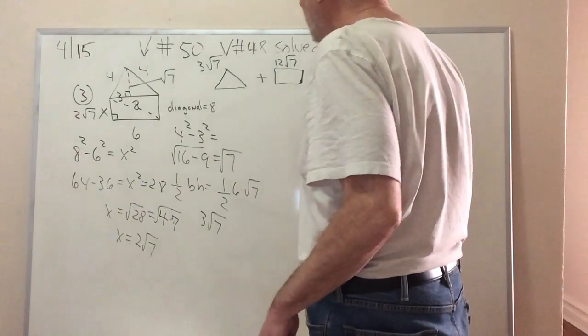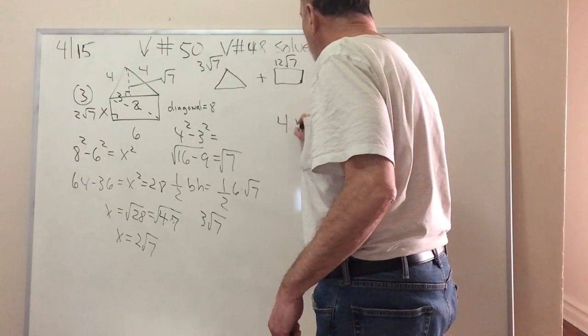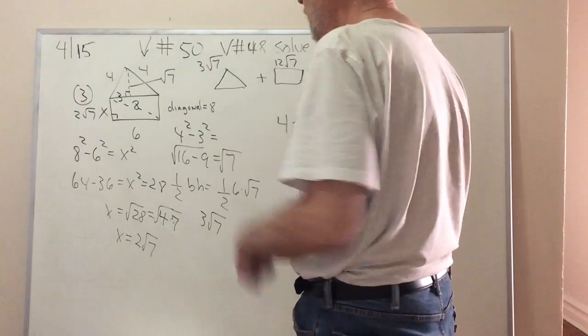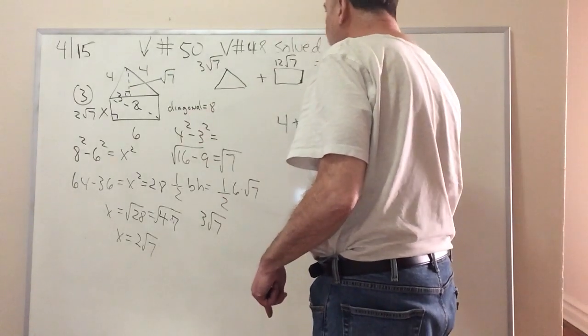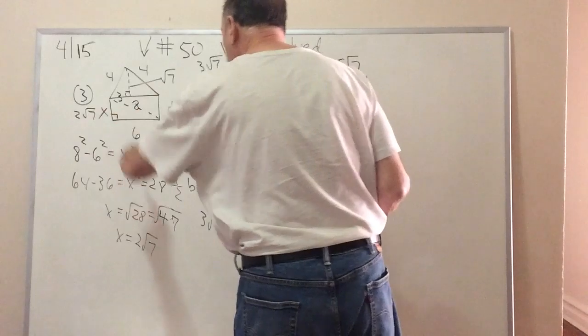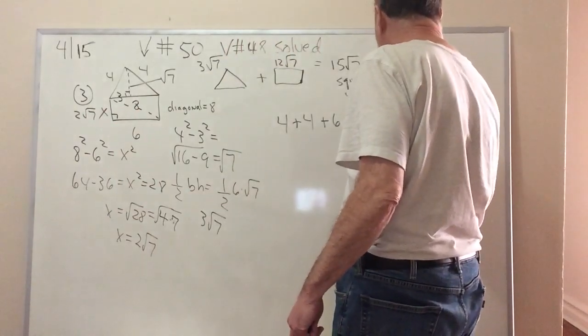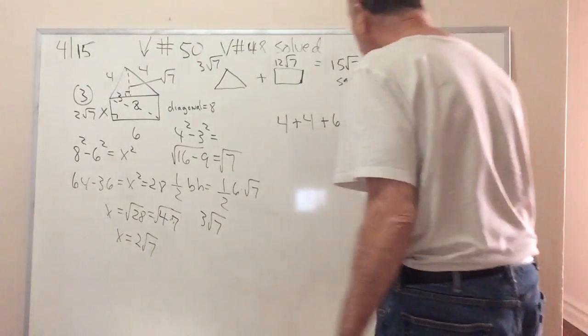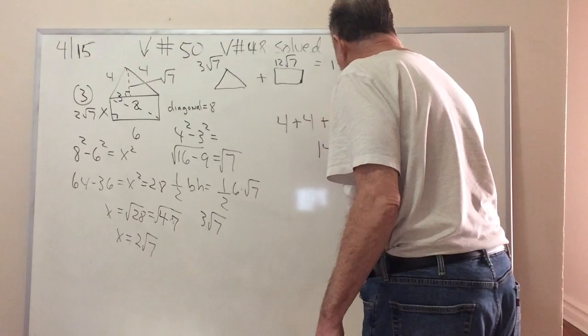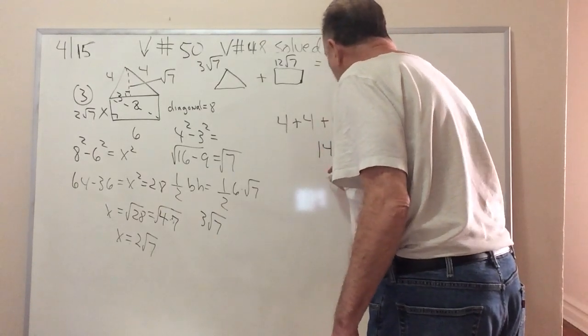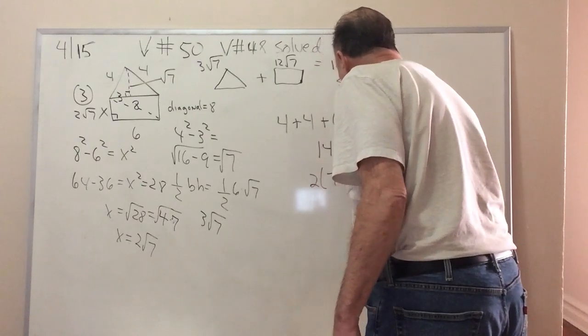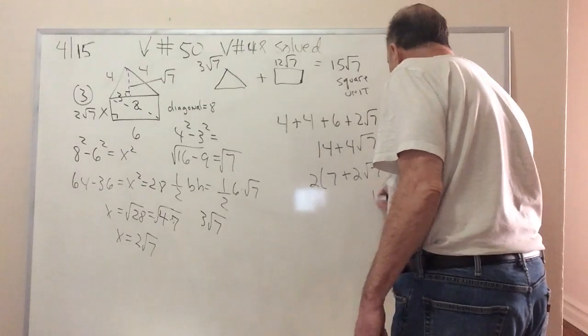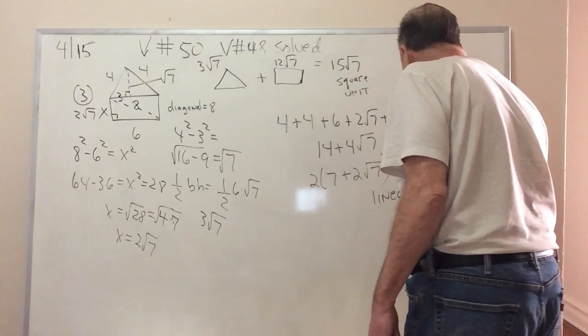And since I have all the sides here, I have 4, 4 that takes care of the isosceles triangle on the top. There's 6 on the bottom. And we just figured out the 2 sides over here. So 2 radical 7 plus 2 radical 7. Okay. Got the sides there. And I end up with 8, 14 plus 4 radical 7. And I'll factor like I did before. And I'll certainly be talking a lot about that. And that's in linear units, the perimeter.